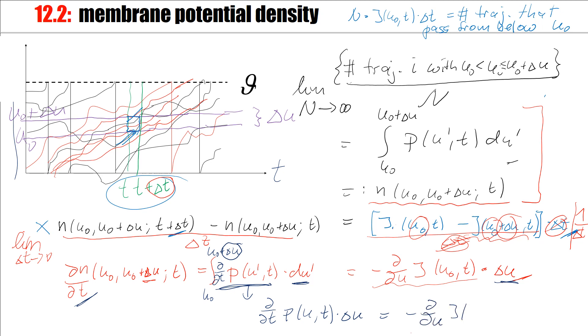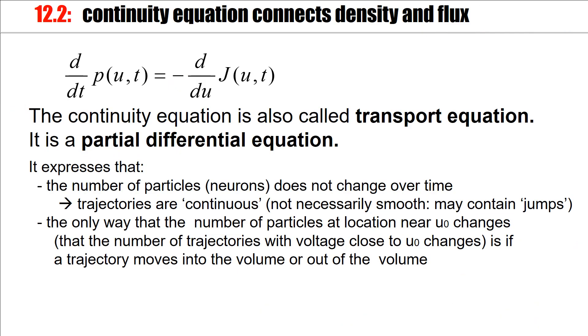So d/dt p of u t times delta u, and I have my derivative d/du j of u t times delta u. Now this derivative is taken at u0. On the right hand side, it's also taken at u0. And now you see that I can cut out delta u on both sides. And what remains is what's called the continuity equation. So here we have this continuity equation. The derivative with respect to time of the membrane potential density is connected to the flux, the probability current, through a reference value u. I write this here as normal derivatives. You can also write it as partial derivatives, d/dt and d/du.